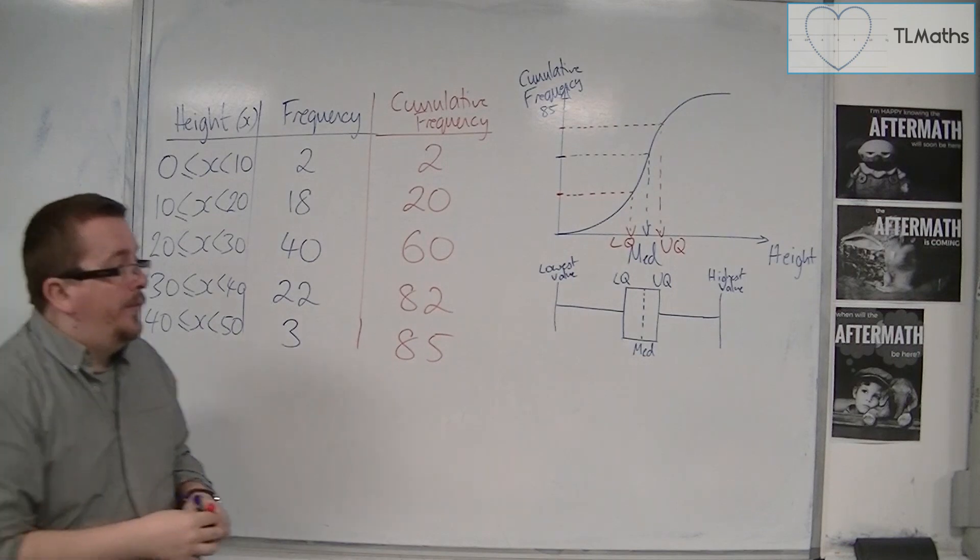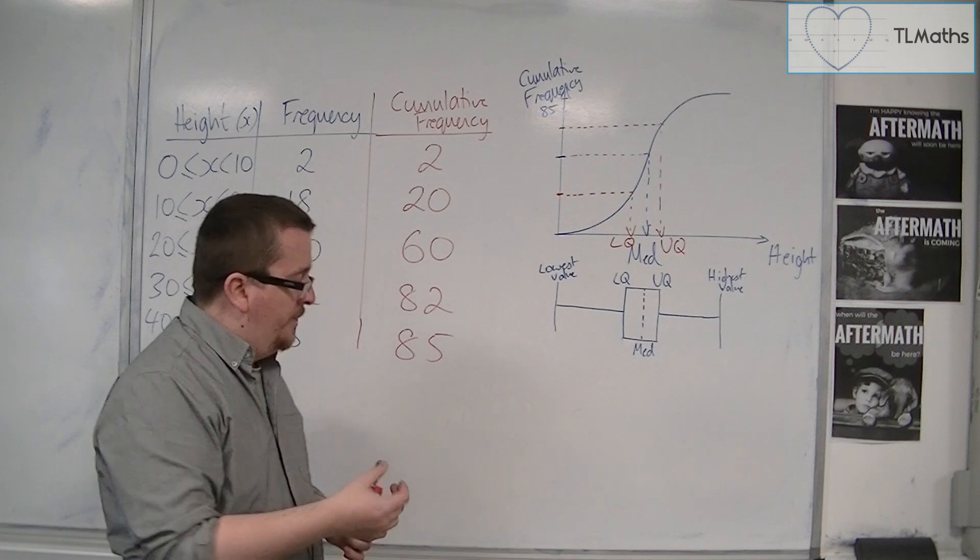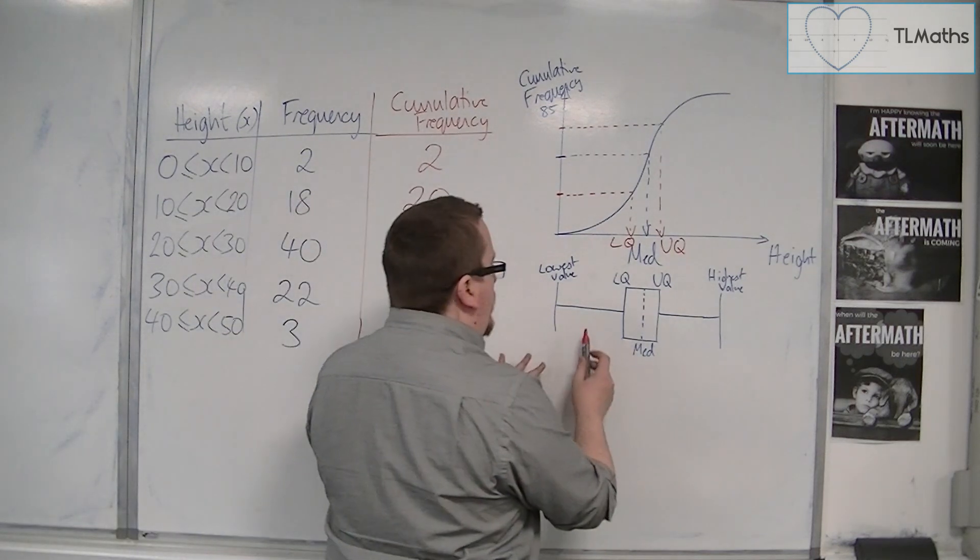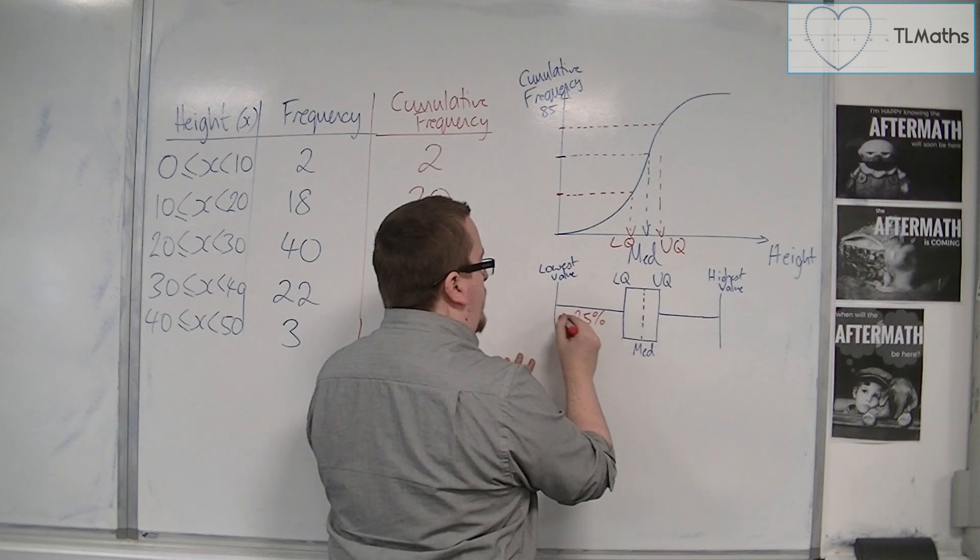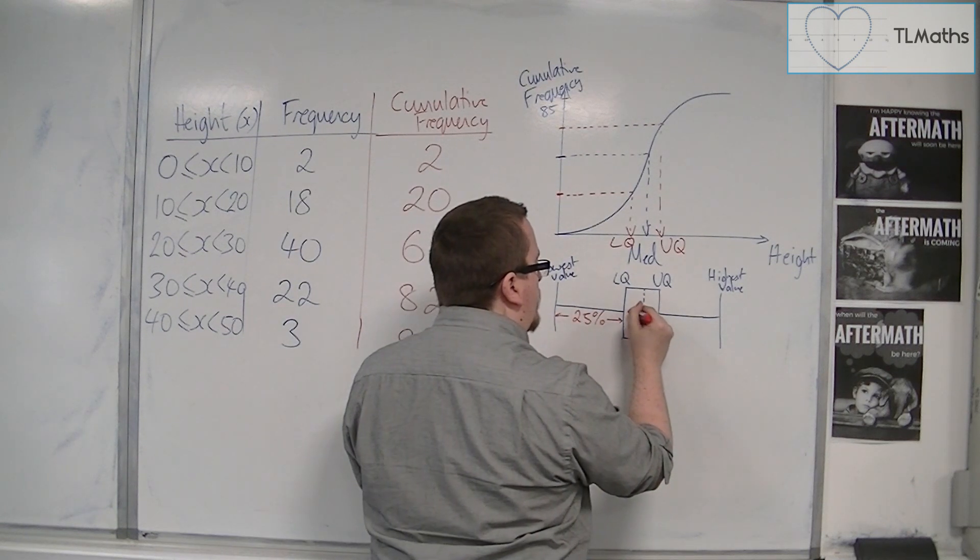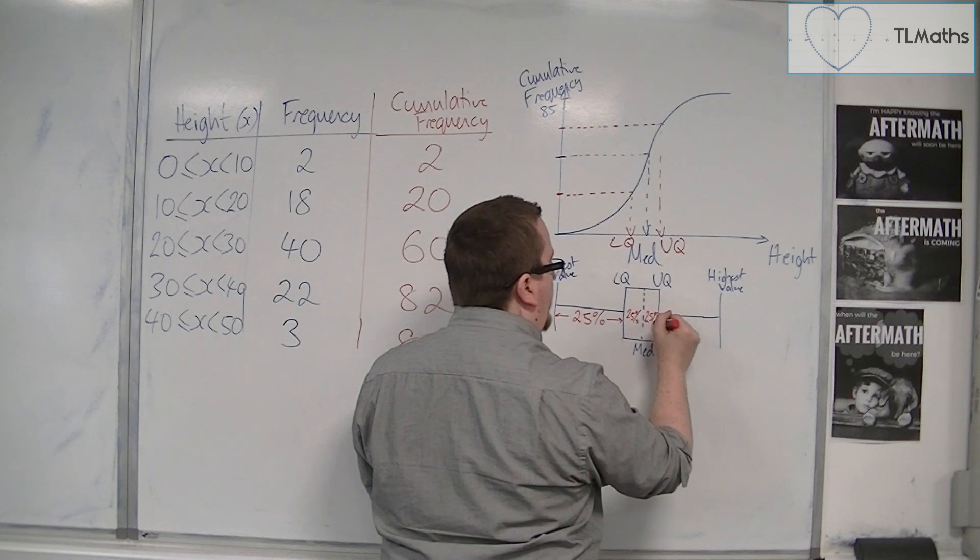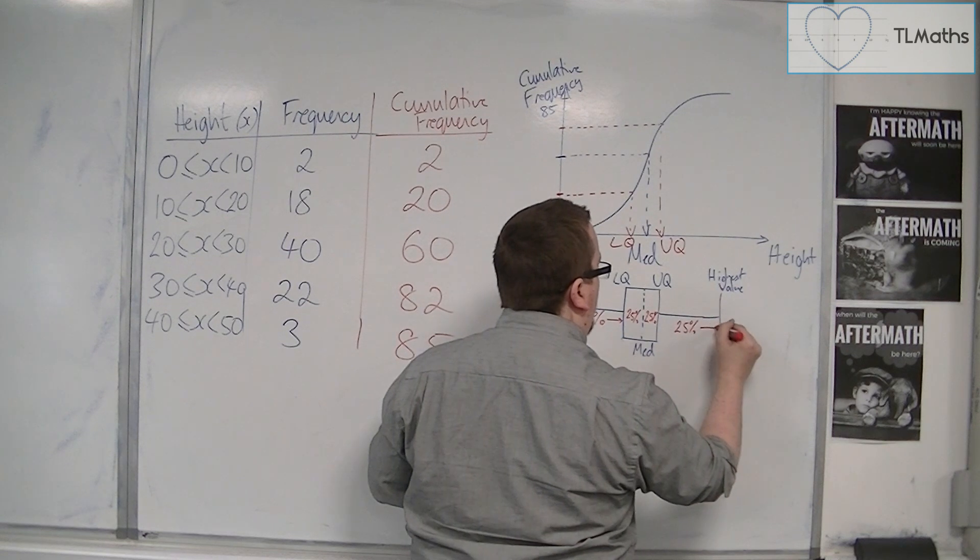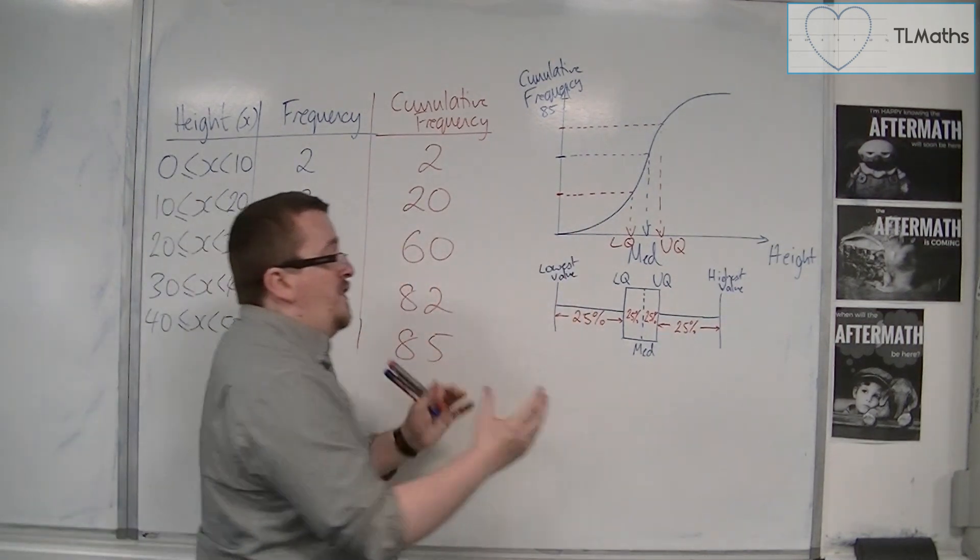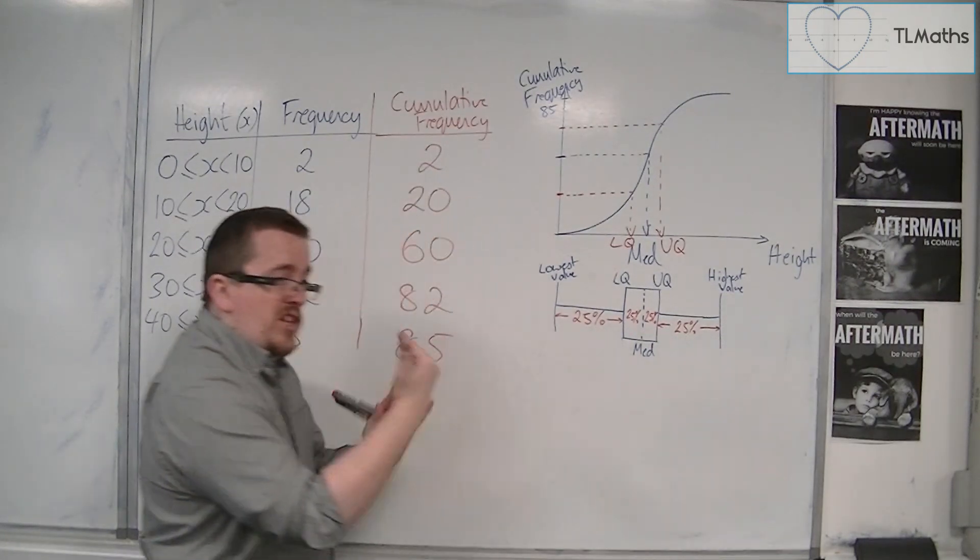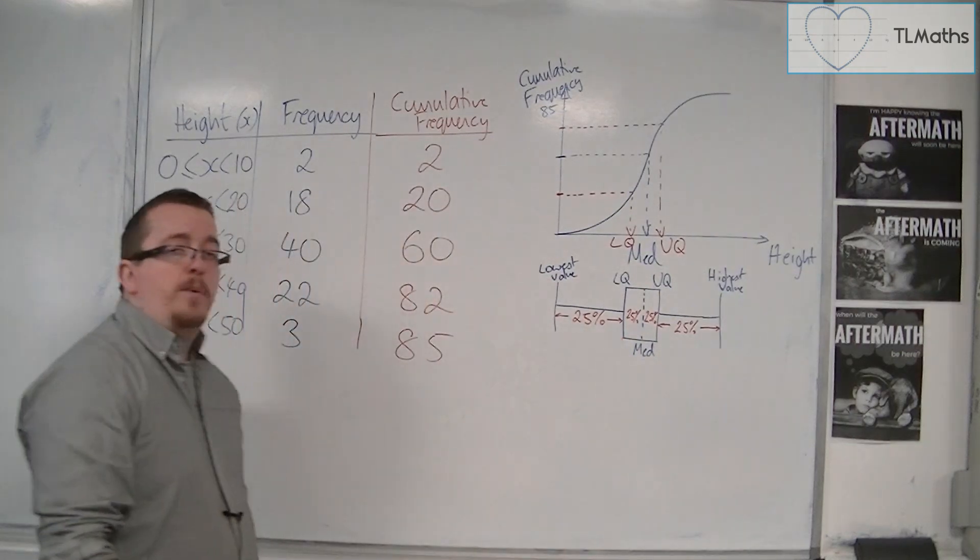And what it represents is a way of showing how spread out the data is. Because, effectively, what you're saying is that this is where 25% of the data is. Here's another 25%. Here's another 25%. And here's the last 25%. So, you can see that the 50%, this 50%, is closely squashed between that lower quartile and upper quartile.